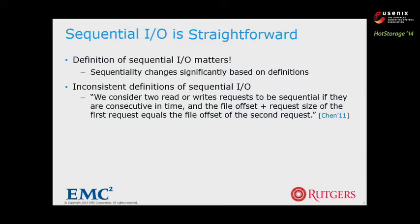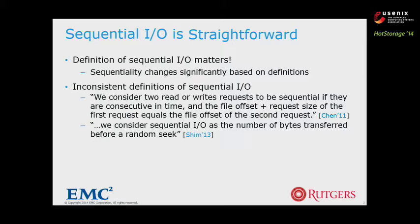This is the common definition of sequential accesses that probably matches most people's intuition. So we can do a survey here — how many of you think this is a good definition for sequential I/O? Another example from a USENIX ATC paper says: we consider sequential I/O as the number of bytes transferred before a random seek. This definition considers the I/O size for sequential accesses. According to the vote so far, there are more people who prefer the second definition, but there's no consensus.